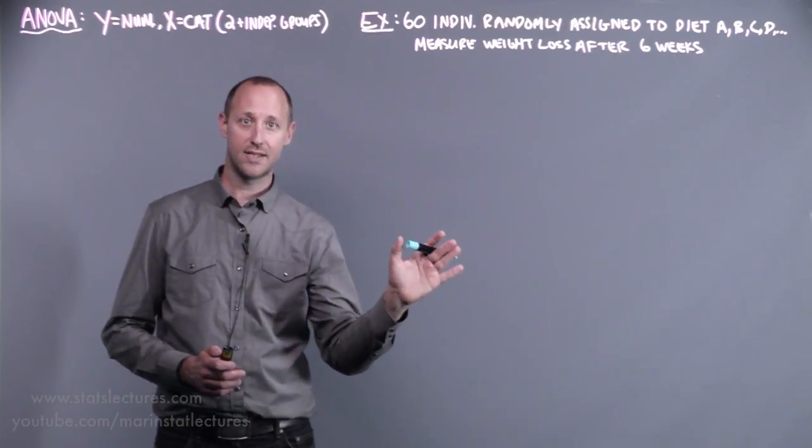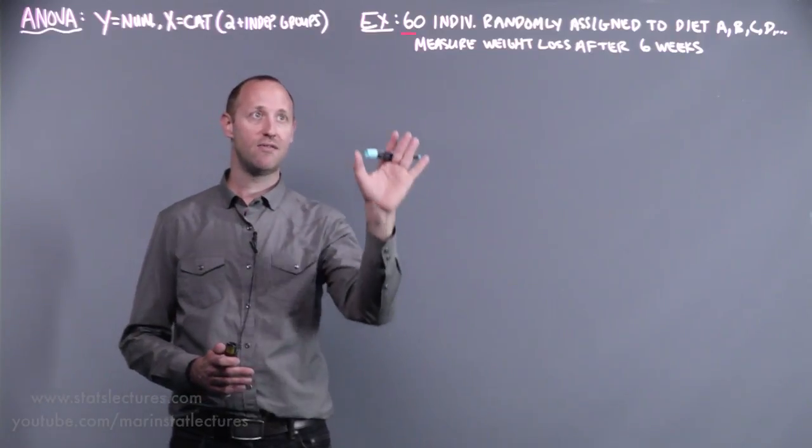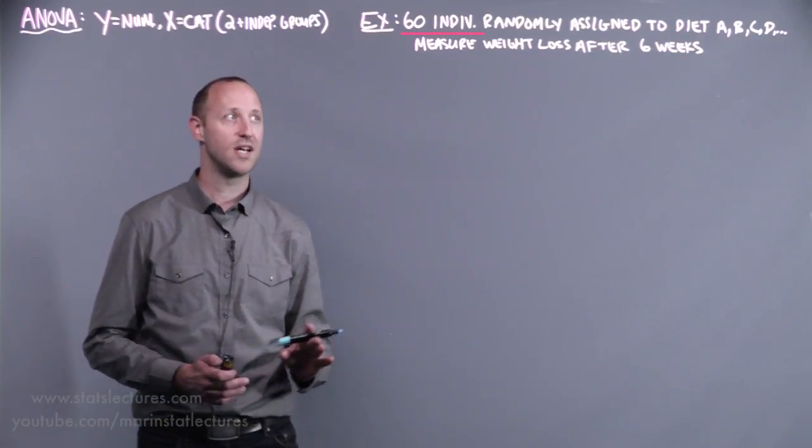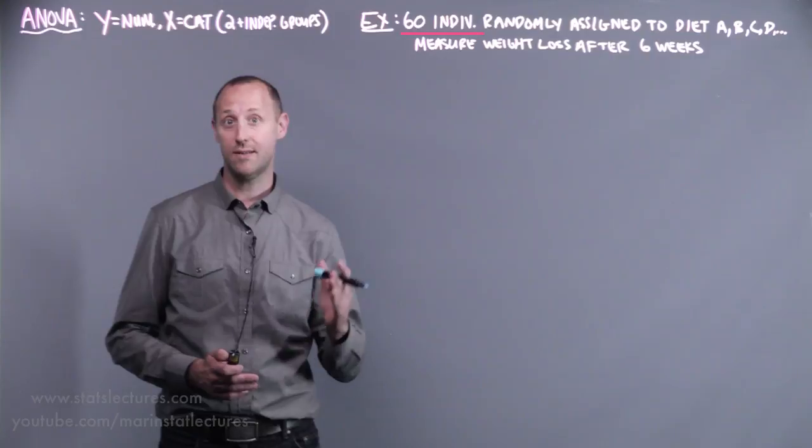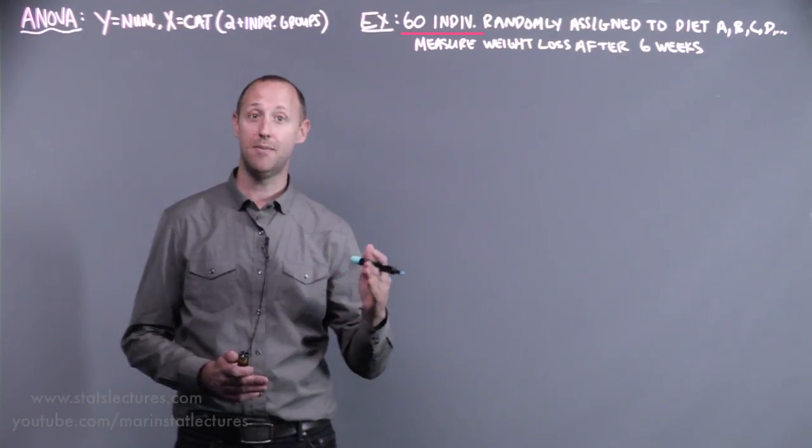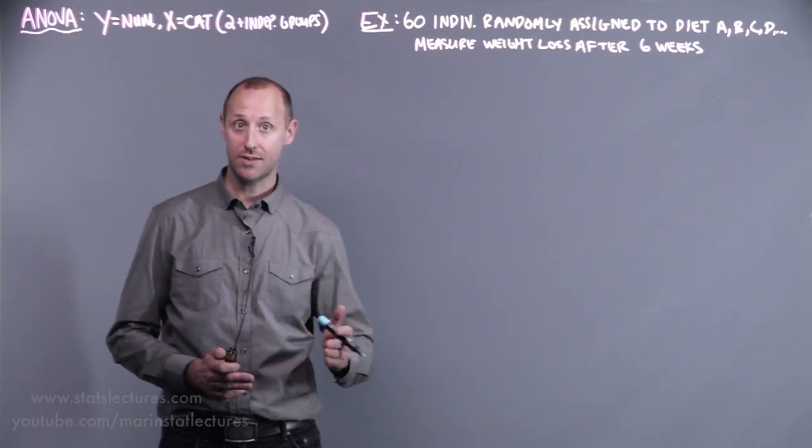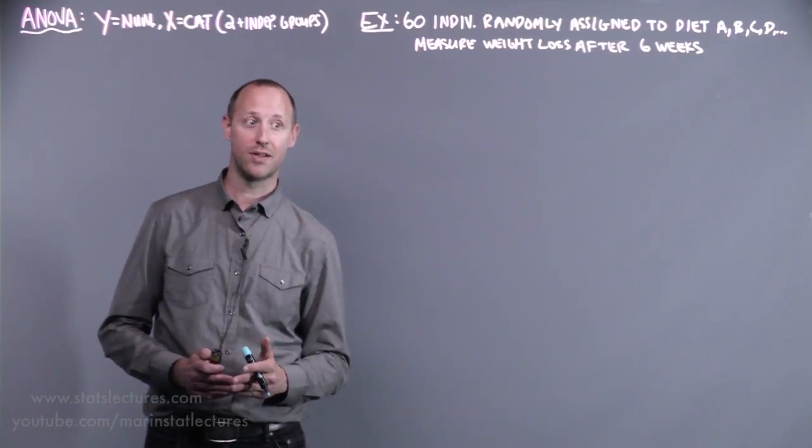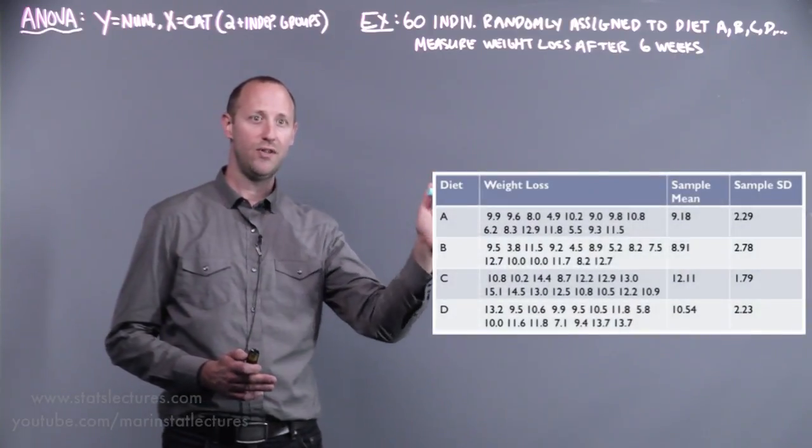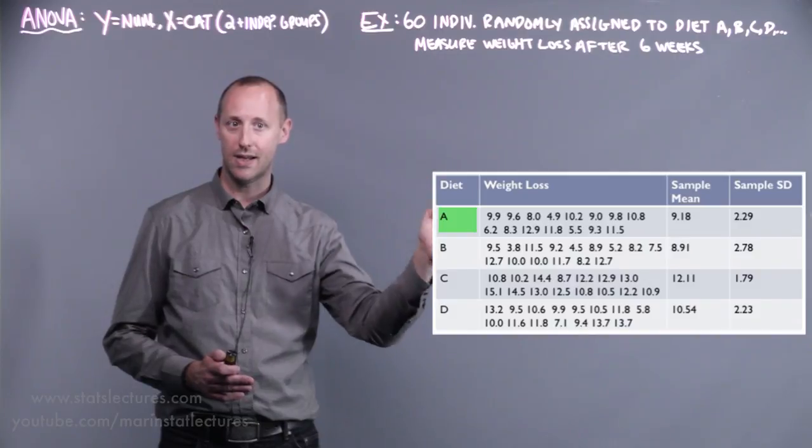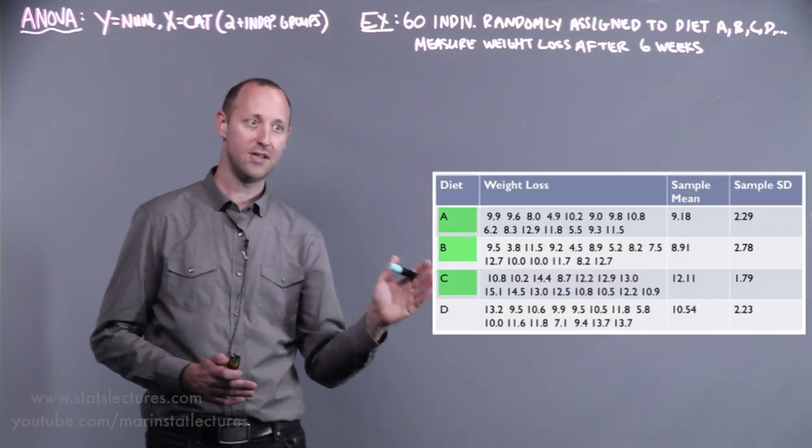We're going to work with this simple data here. We have 60 individuals who are randomly assigned to one of four diets—diets A, B, C, or D. They have their weight loss measured after six weeks of being on the diet. We can see 15 people have been assigned to diet A, 15 to B, 15 to C, and 15 to D.